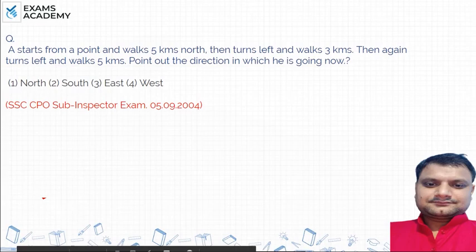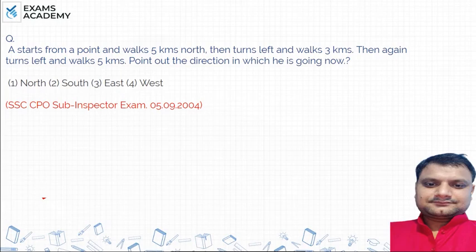This is also the direction question. How will we solve it? We will see it. It says that A starts from a point and walks 5 kilometers north. It goes to the north. This is a previous year question from SSC CPO.